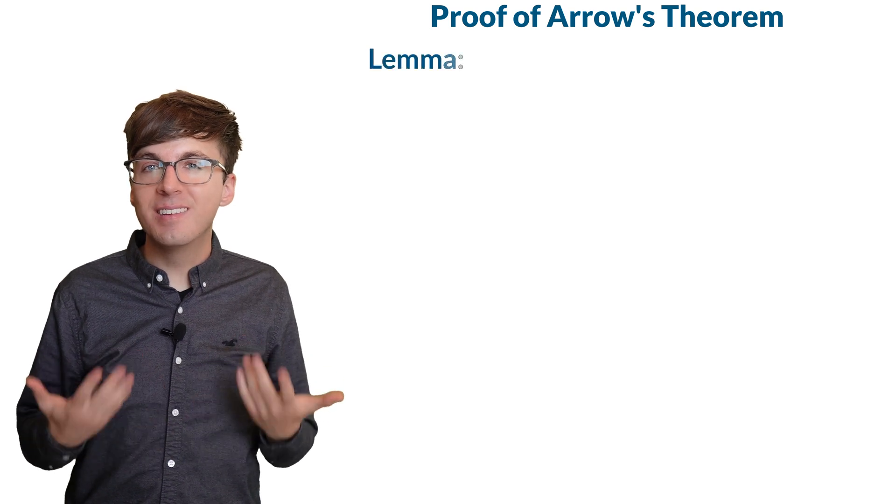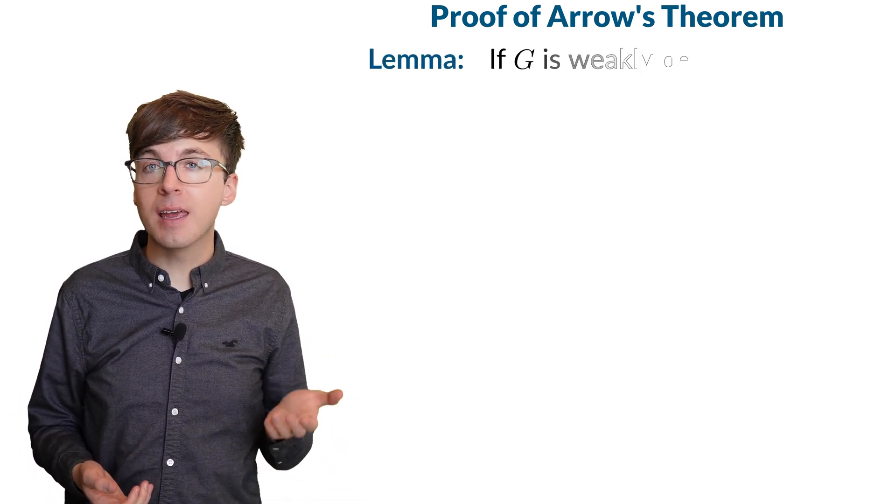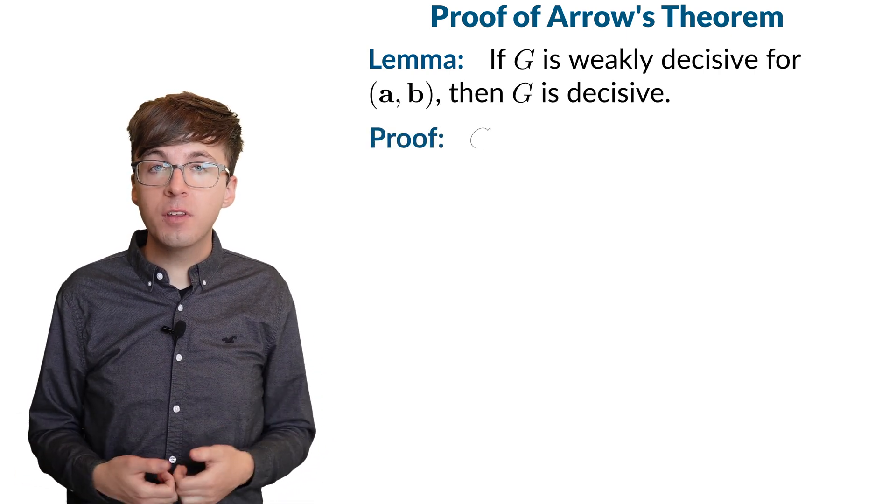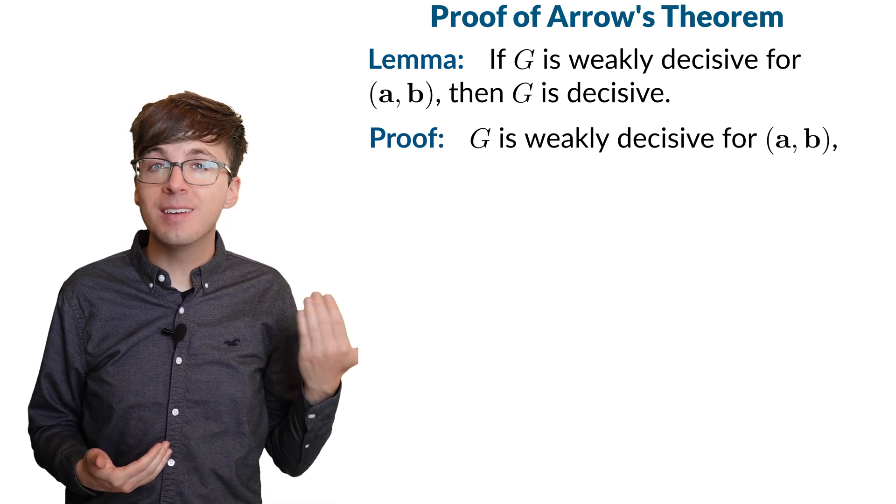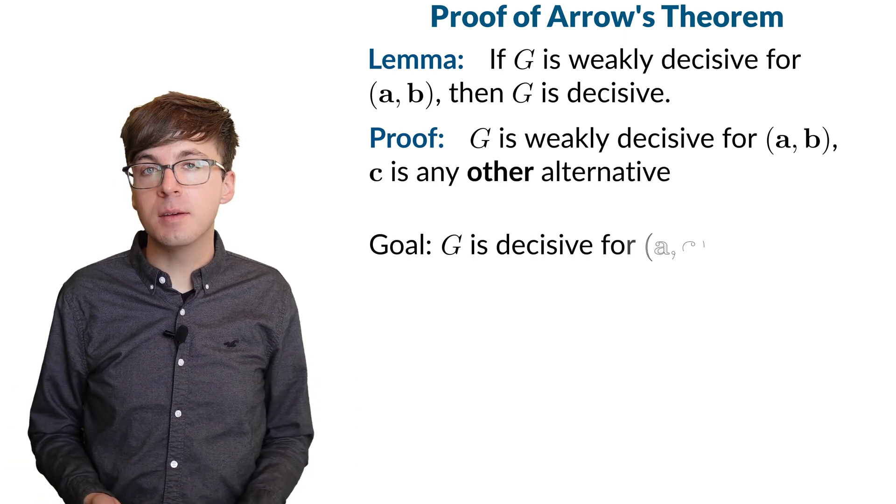Step one is this lemma. If a coalition G is weakly decisive for AB, then in fact it is decisive. We start with the coalition G which is weakly decisive for AB. We'd like to show that G is decisive for AC for any alternative C.